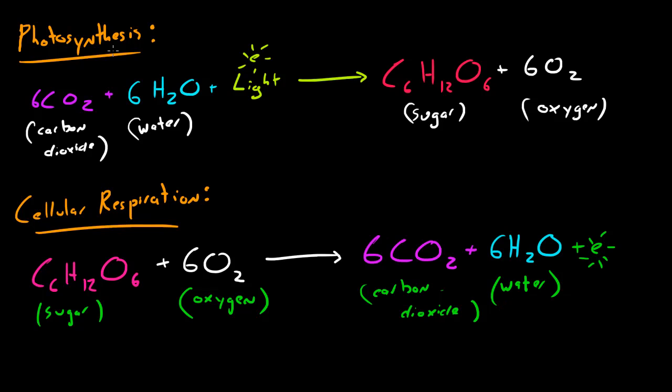To recap: in photosynthesis, in order for a plant to make food, it needs carbon dioxide, water, and energy from the sun. Whenever it combines those in its own special way, it makes sugar and has a byproduct of oxygen, which it gives to the environment.